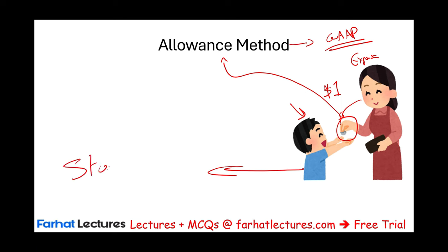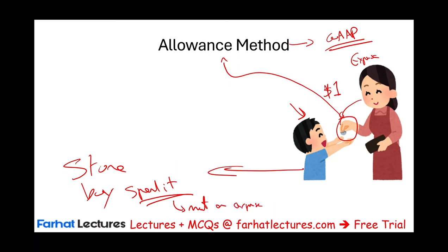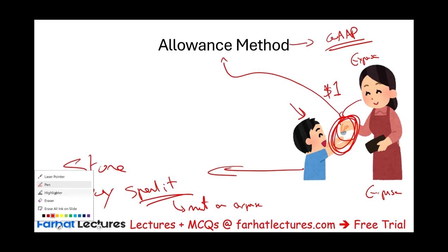This child will go to the store and buy chewing gum, chocolate, or soda — whatever. When they spend this money, it's not an expense for the mother. Why? Because the expense took place when she handed the money to the child. So this is what the allowance method is: the allowance method allows the company to recognize the expense when the mother gives the dollar to the child. In other words, the expense is recognized way earlier than it actually takes place. Just keep that in mind as we go over the session.